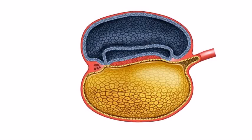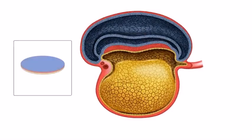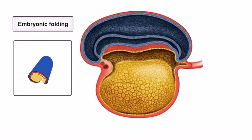During the fourth week of development, a period of rapid growth, the embryo begins to change shape from a flat trilaminar disc into a cylinder, a process known as embryonic folding.